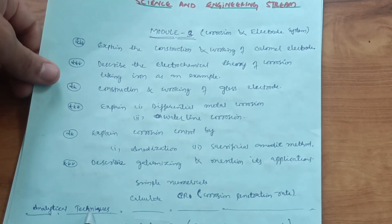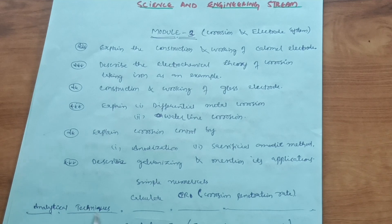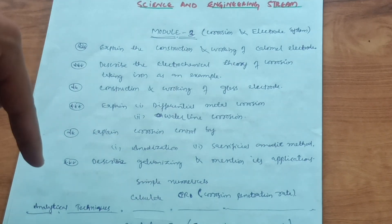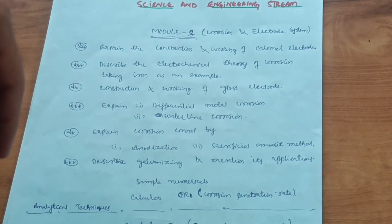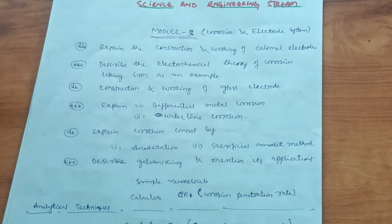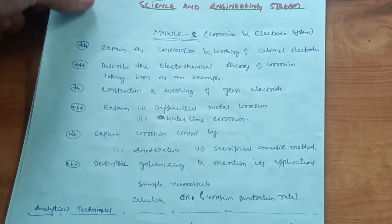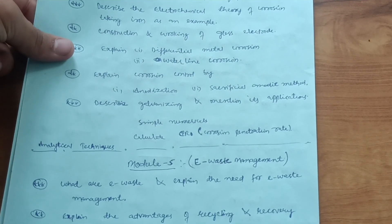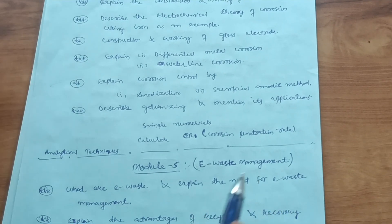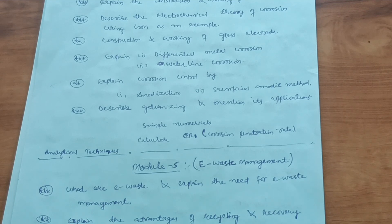There are also analytical techniques — two chapters — so if you want to cover that second portion you can go through the model question paper, but the corrosion part is the easier one. Then Module 5 comes up, which is again theoretical — e-waste management. It is an easy module. If you want to concentrate on this chapter, just try to understand the basic concepts of e-waste and e-waste management, and then you can write it in your own language.